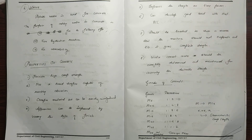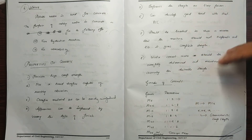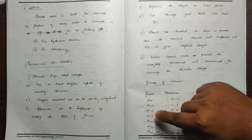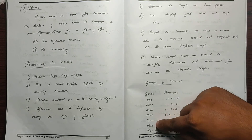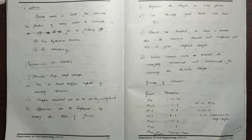The grades of concrete are M5, M7.5, M10, M15, M20, M25, M35, and M100.